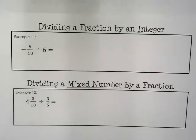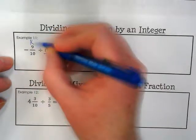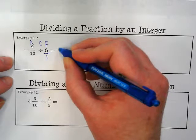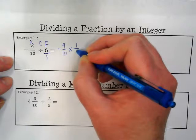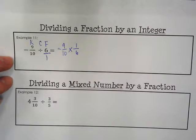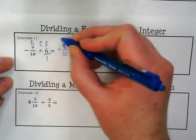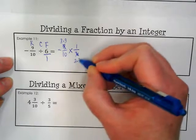If I'm dividing a fraction by an integer or a whole number here, I need to put the invisible 1 underneath this, and then do Keep, Change, Flip. So I end up with negative 9 over 10 times 1 over 6. When I look at this, is there anything I can reduce by? These both have a factor of 3 in common. So if I show their factors, 3 times 3 is still 9. 2 times 3 is still 6.